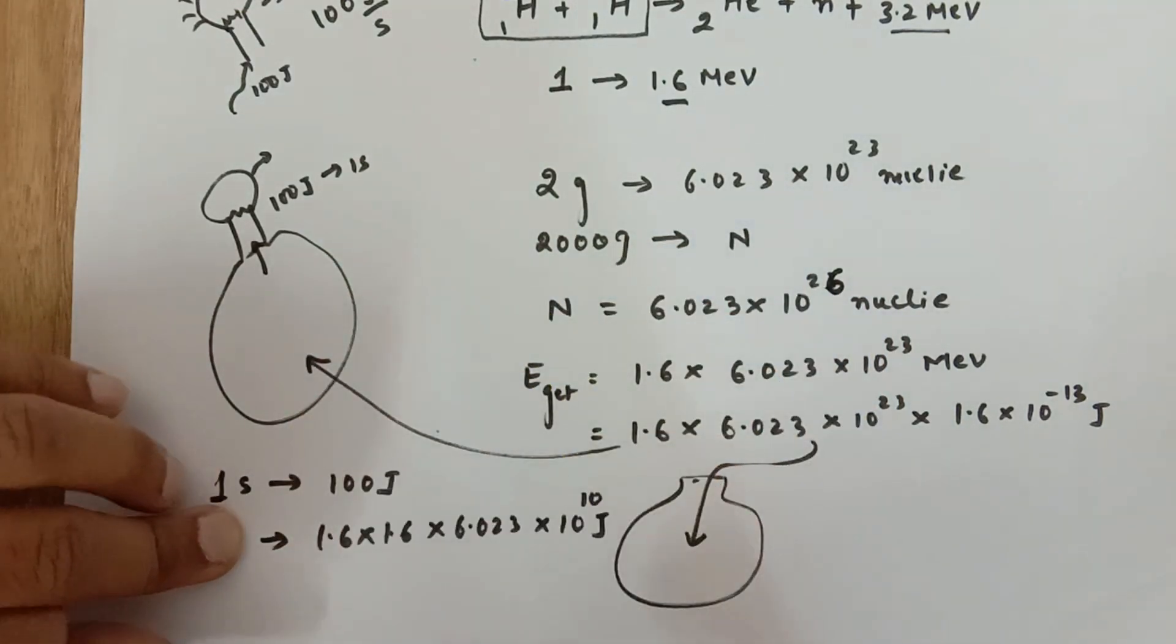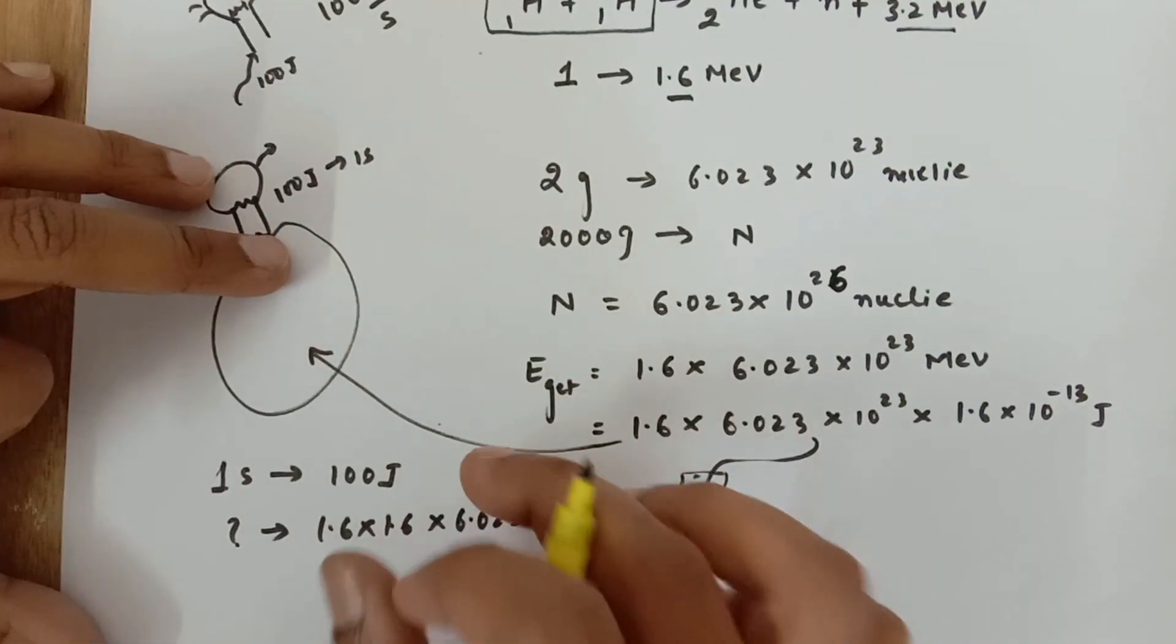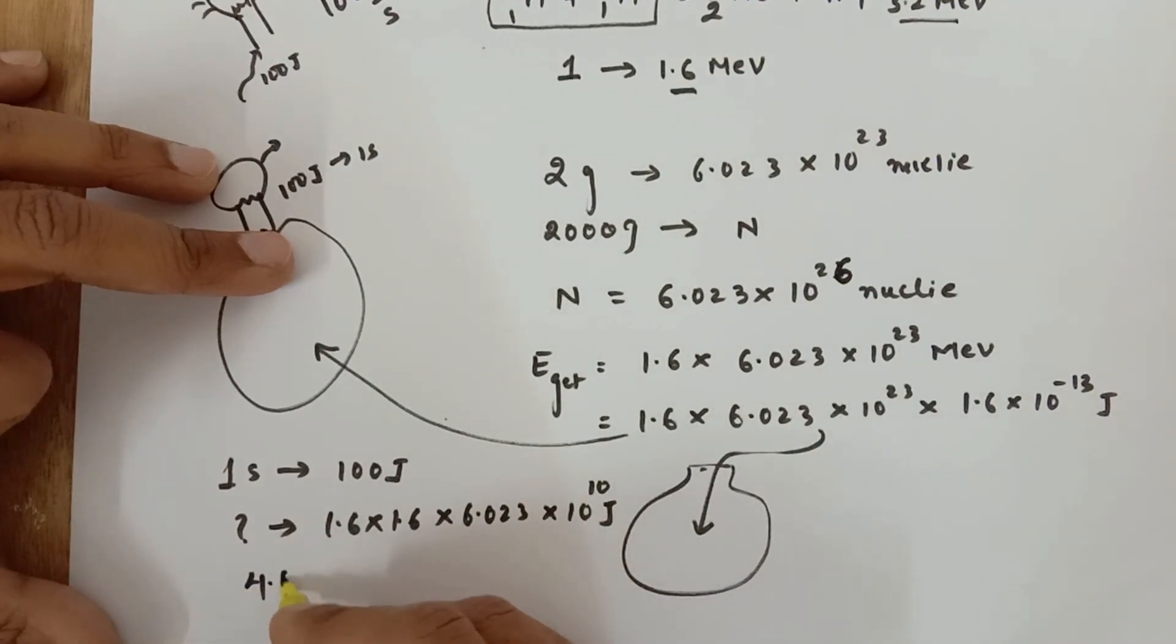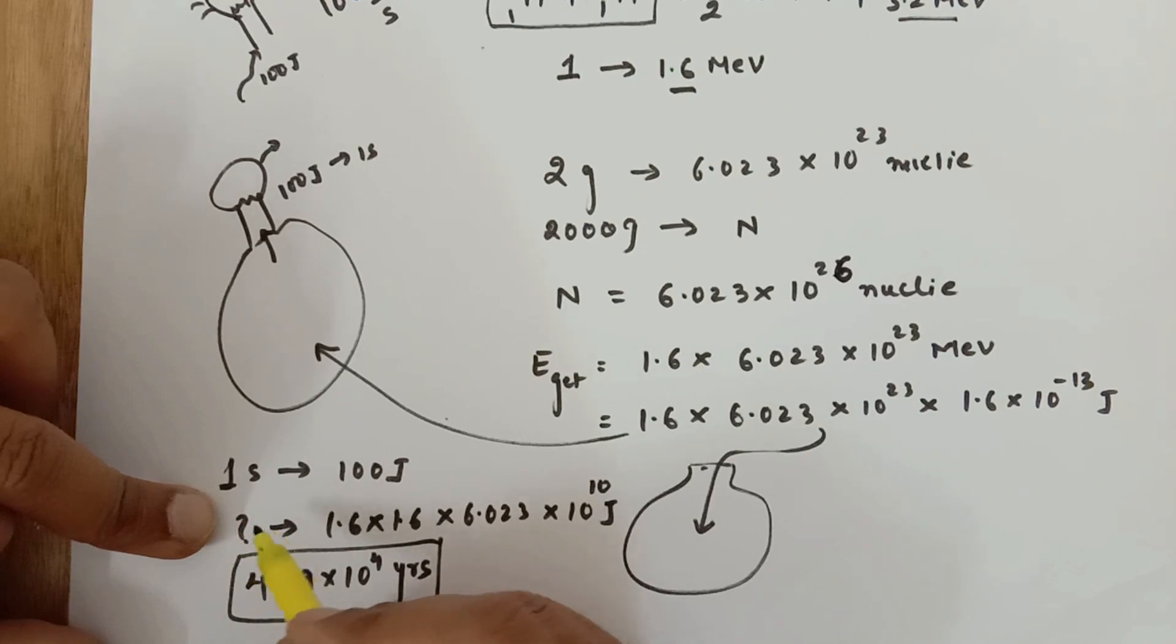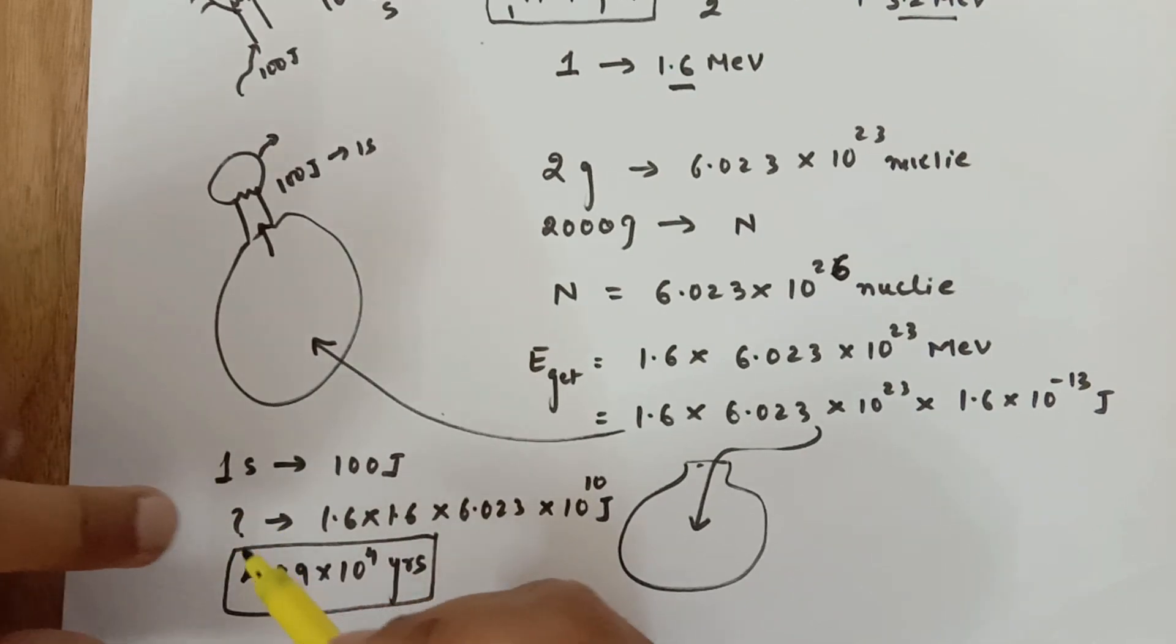Divided by 365 you will get in years, and that answer is 4.89×10^4 years. Simply that calculation, cross multiplication, I am leaving on you, because this part you will get in seconds and you will have to convert that into years.